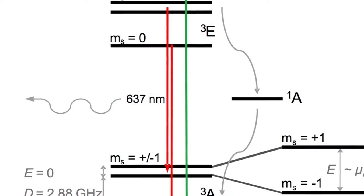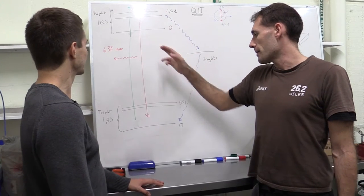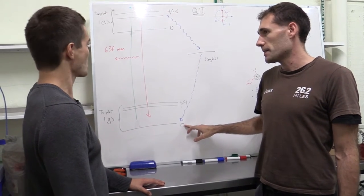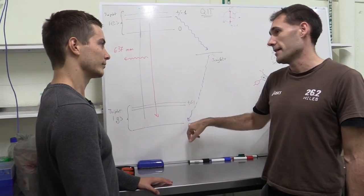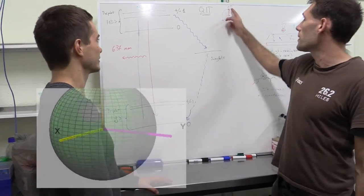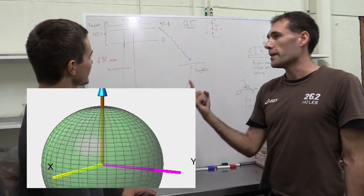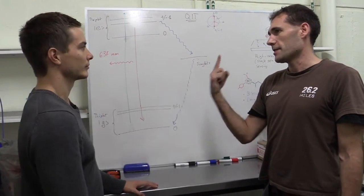So just by exciting with the green laser, you can polarize the system in this state. So irrespective of which state you start with, you end up in the zero spin state, which means that if you look at it on the Bloch sphere, you always polarize your system in the spin state zero.